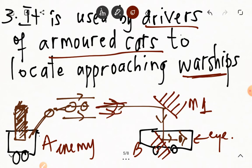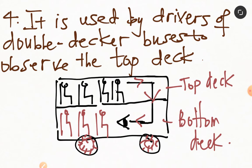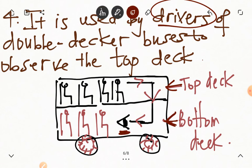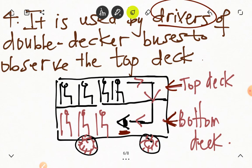Now let's look at one more use. Drivers of double-decker buses also use the mirror periscope in order to locate occupants at the top deck. So here you see that we have the top deck and we also have the bottom deck. So a driver at the bottom deck can see occupants, can see the top deck using a mirror periscope. So this is a mirror periscope.